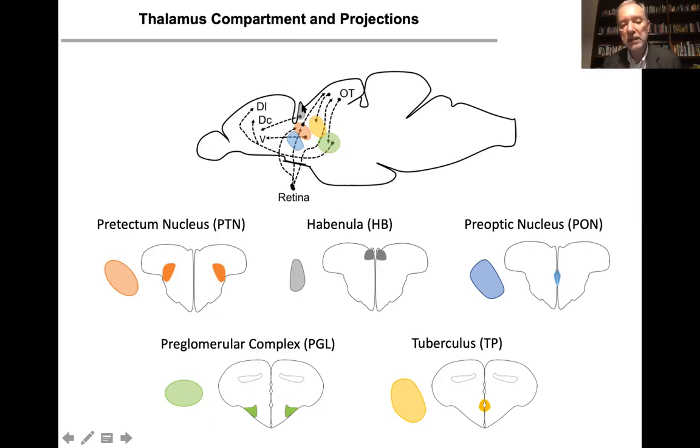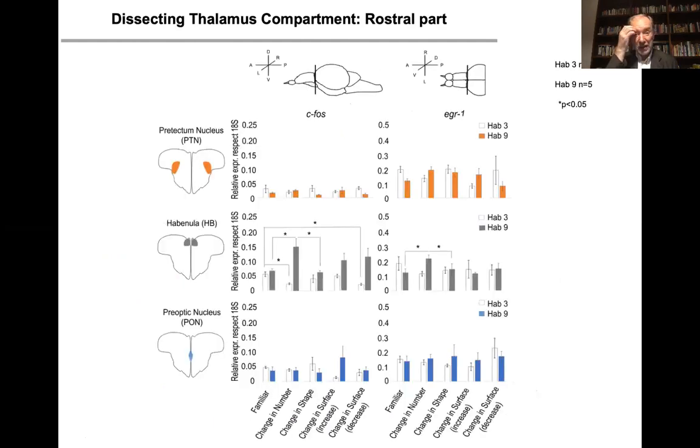So again we repeated the same experiment behaviorally I described before, and we looked at the expression in the more rostral and the more caudal part of the thalamus. And what we found was that there was a selectivity of response in the habenula for both change in number in this case but also to a certain extent change in size, in continuous quantity.